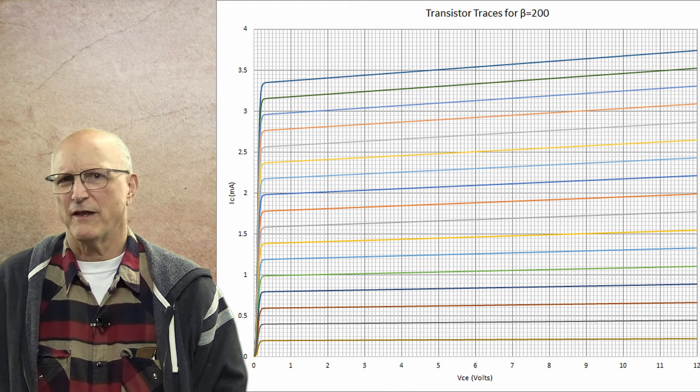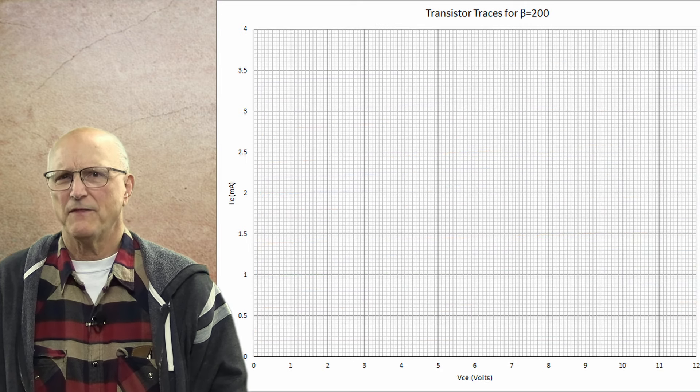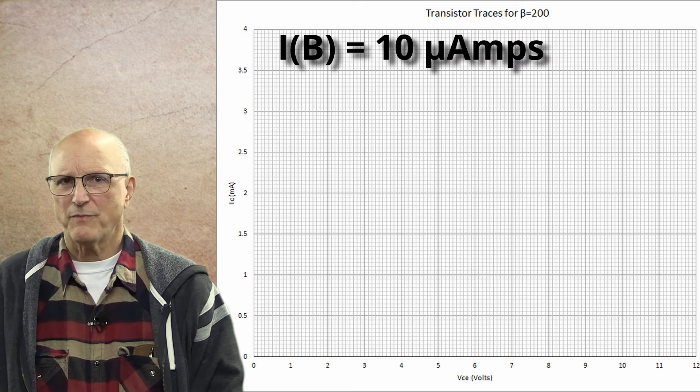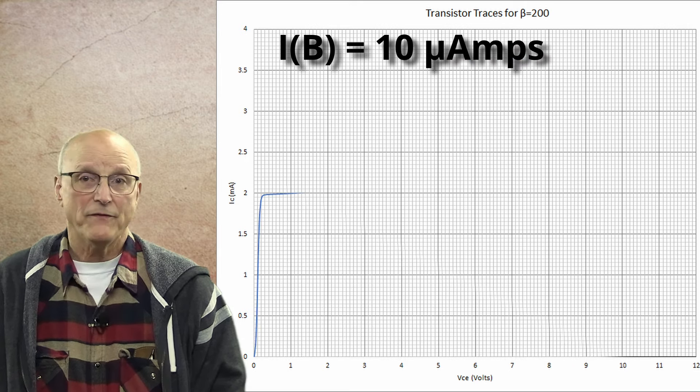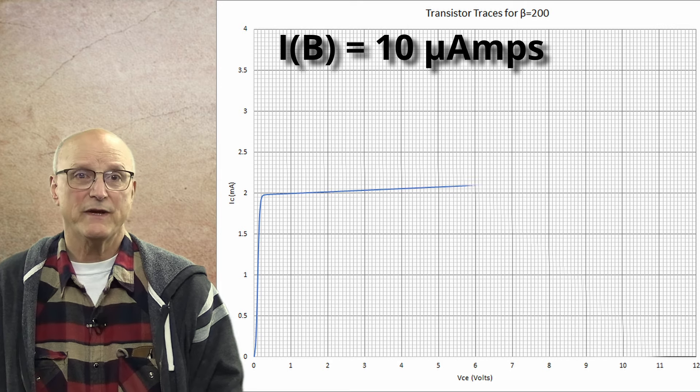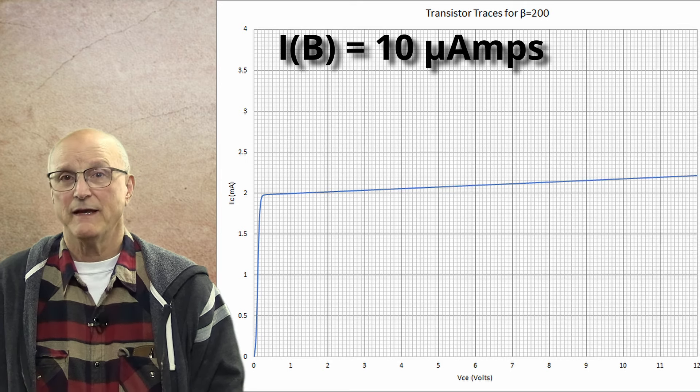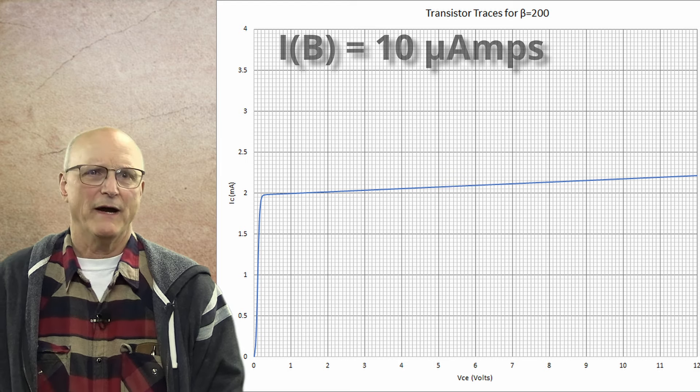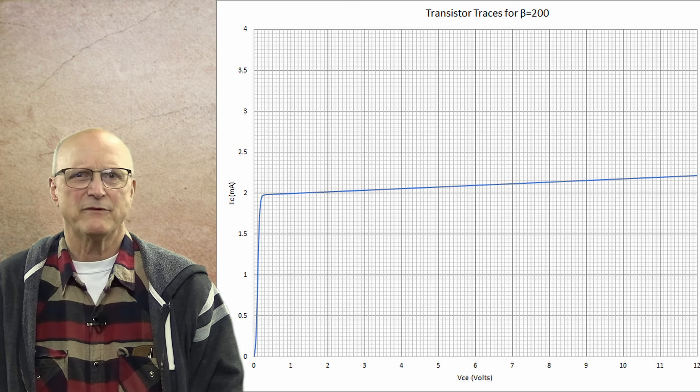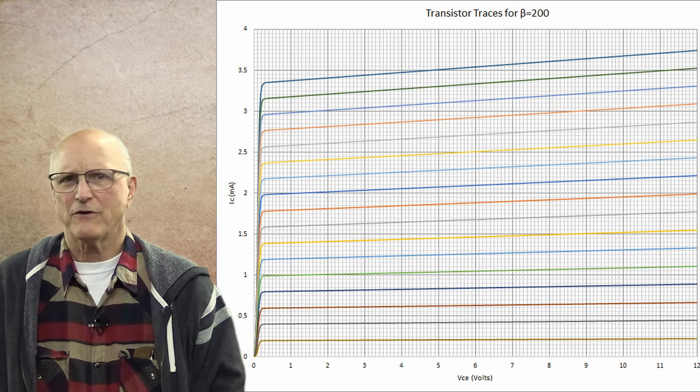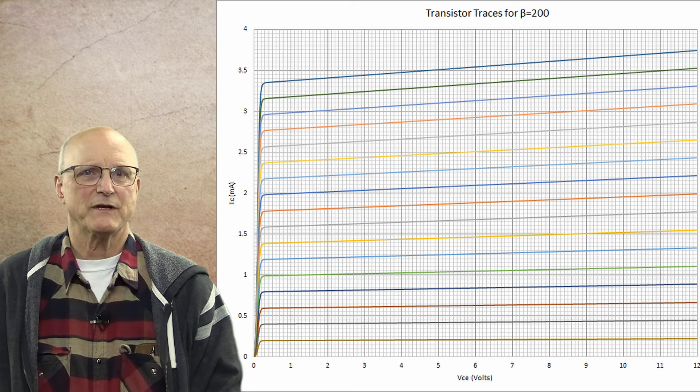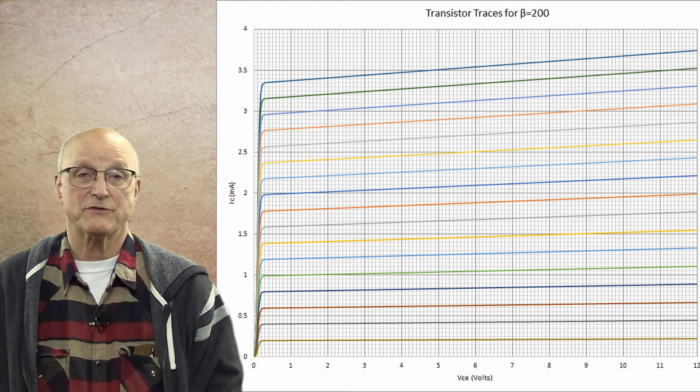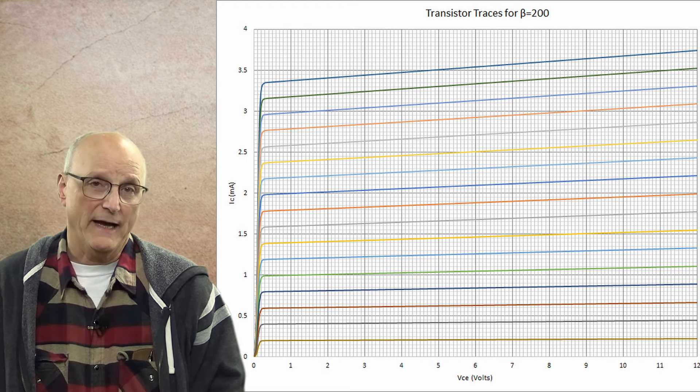But there's one other factor that affects collector current, and that factor is the base current. We supply a fixed base current to the transistor and then plot the collector current as we increase the collector emitter voltage. And this is what we are seeing with each line in the graph. By doing this and a set number of base currents, we end up with a family of curves which help describe the transistor's operation. This is what we get when we use a transistor curve tracer.